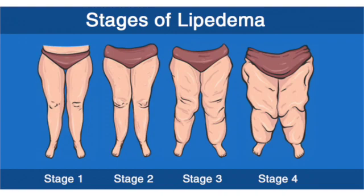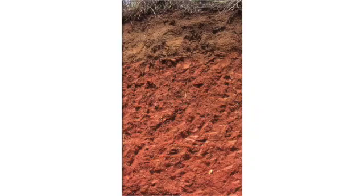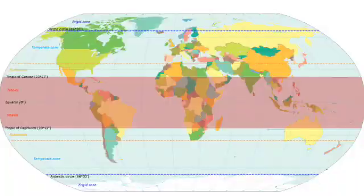Lipedema causes excess fat to collect in the lower part of our body and is more common in women. This condition typically runs throughout the family. Podoconiosis is a rare type of lymphedema and is often caused by long-duration exposure to mineral deposits in volcanic rock and red clay soils. It is more common in tropical regions and is an inflammatory skin disease that starts at the foot and goes up to the leg and knee.